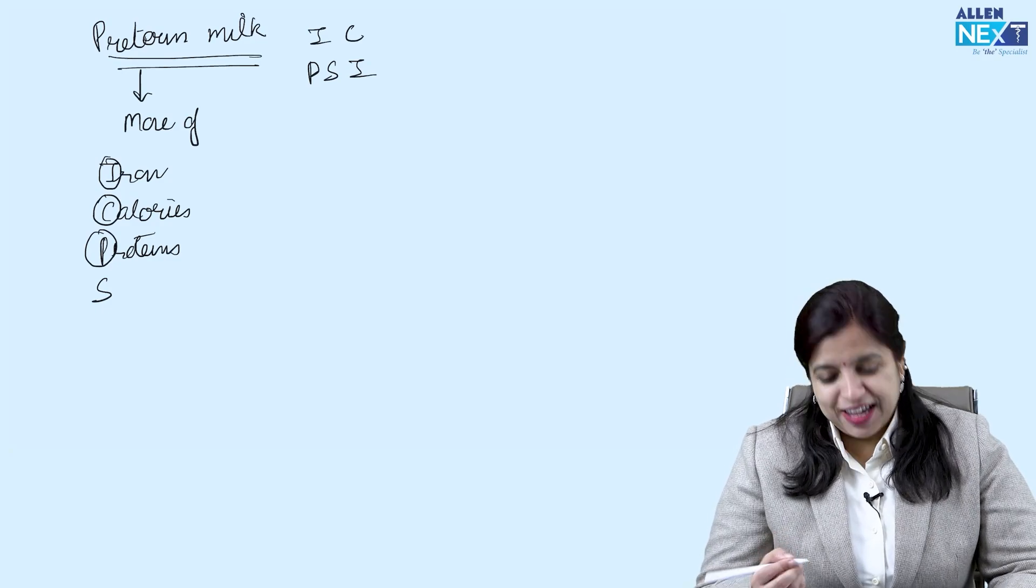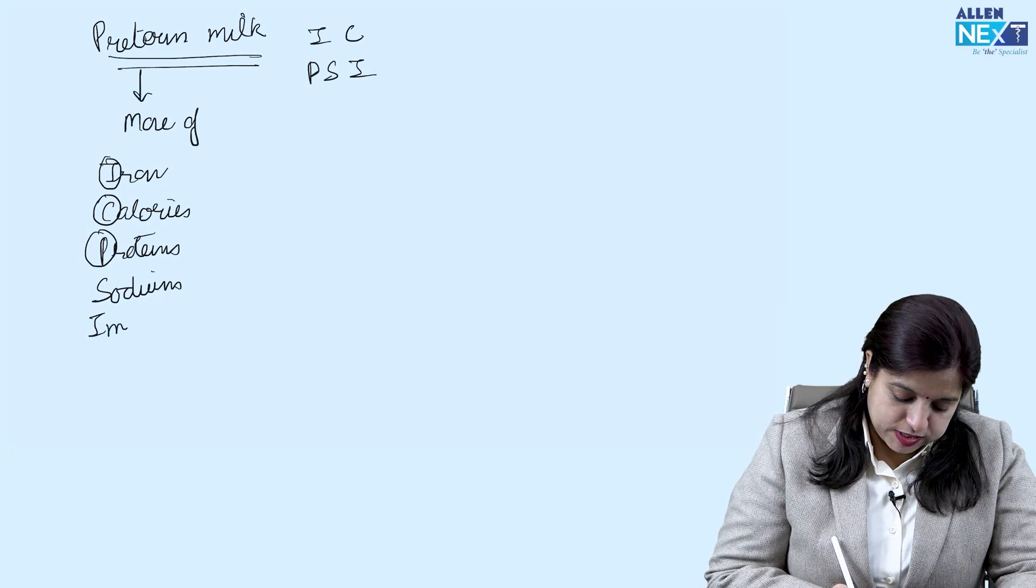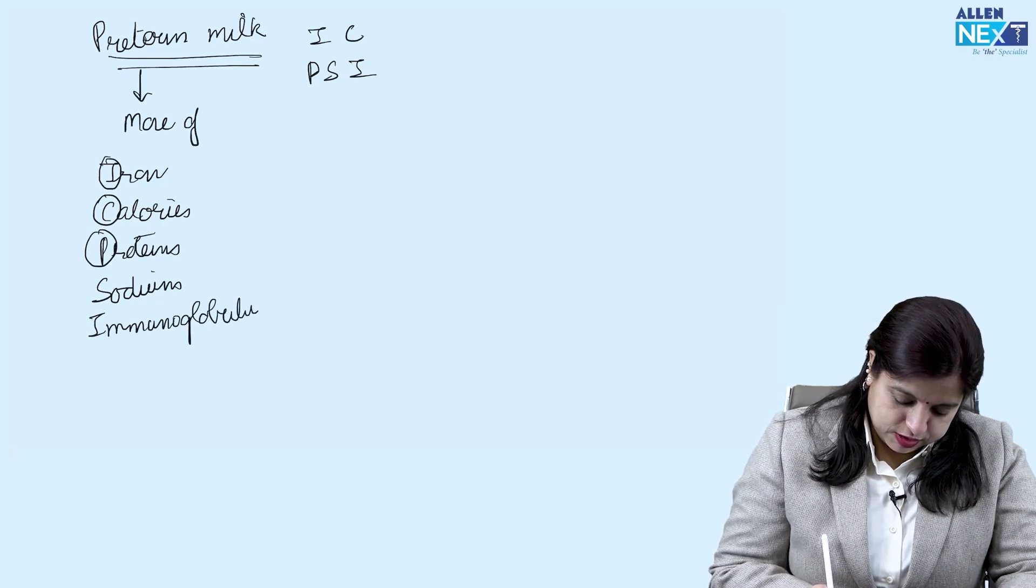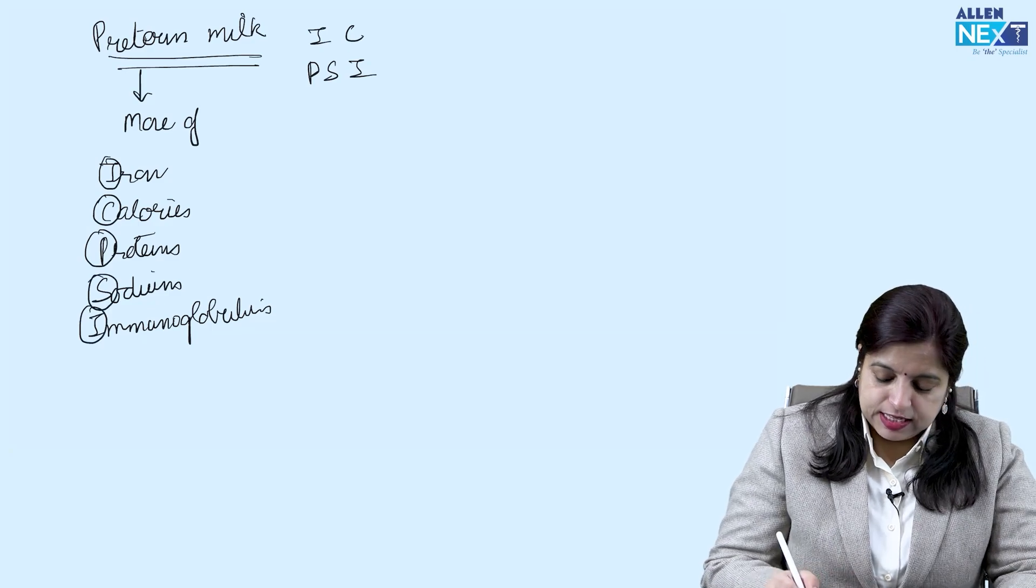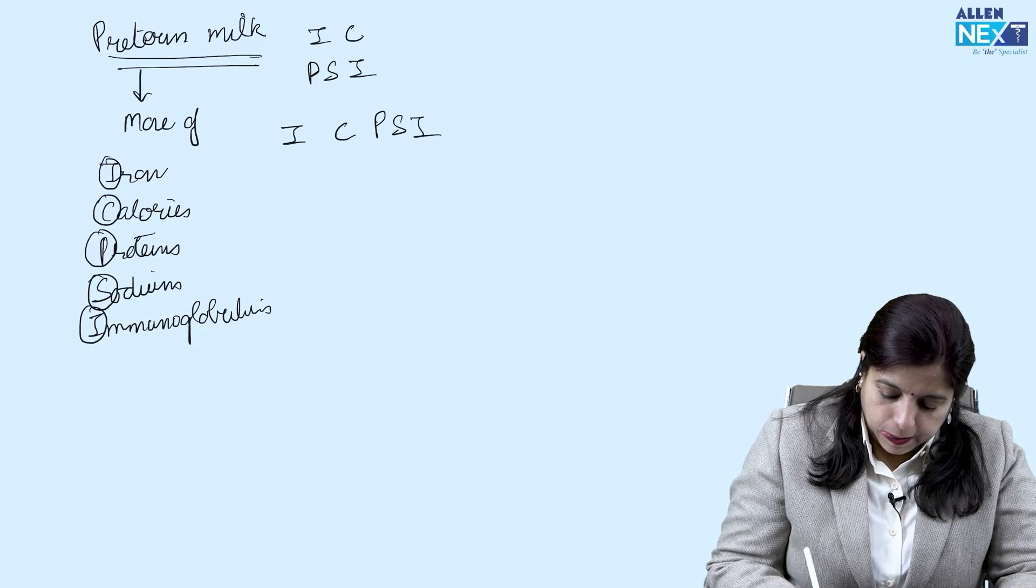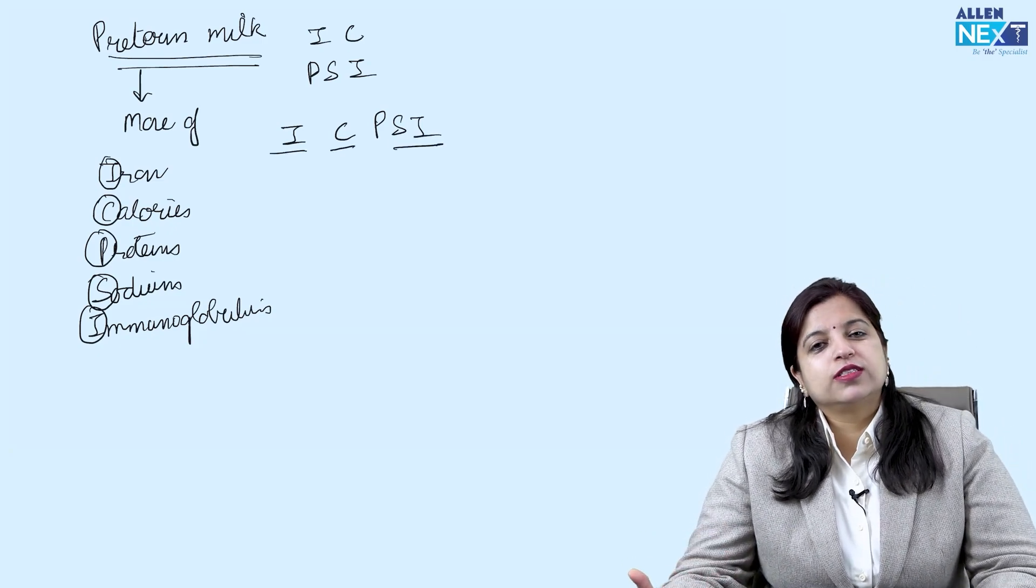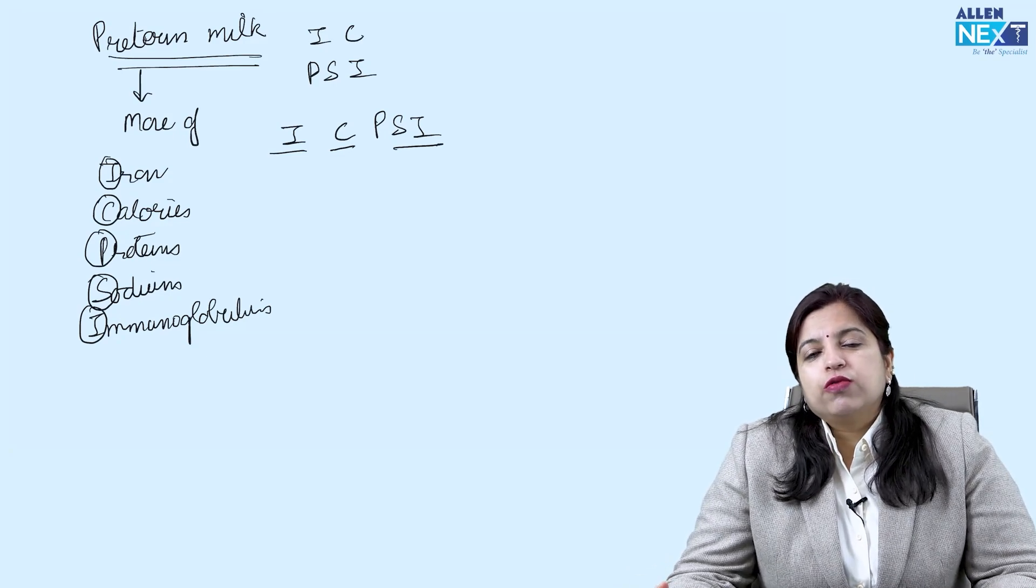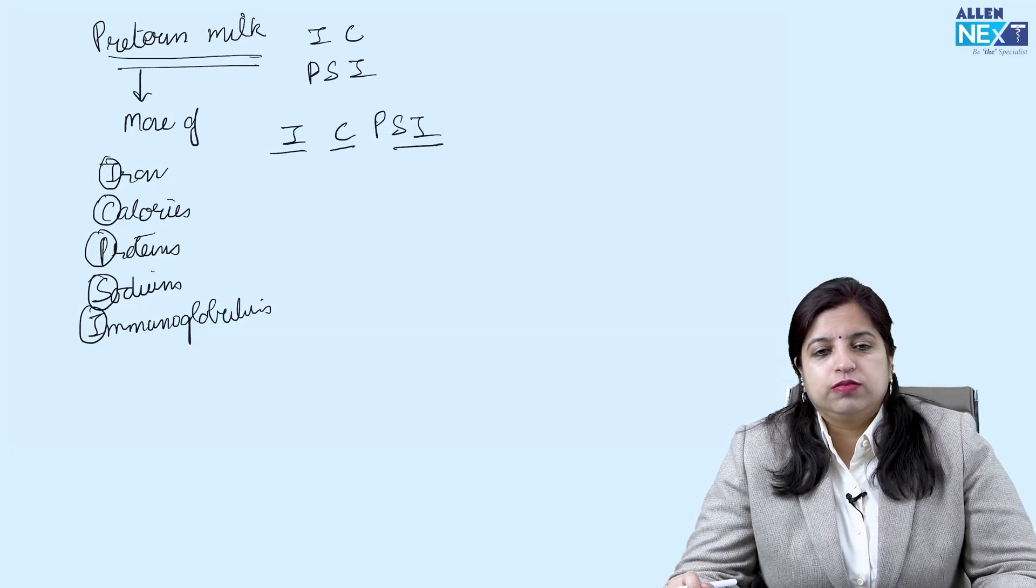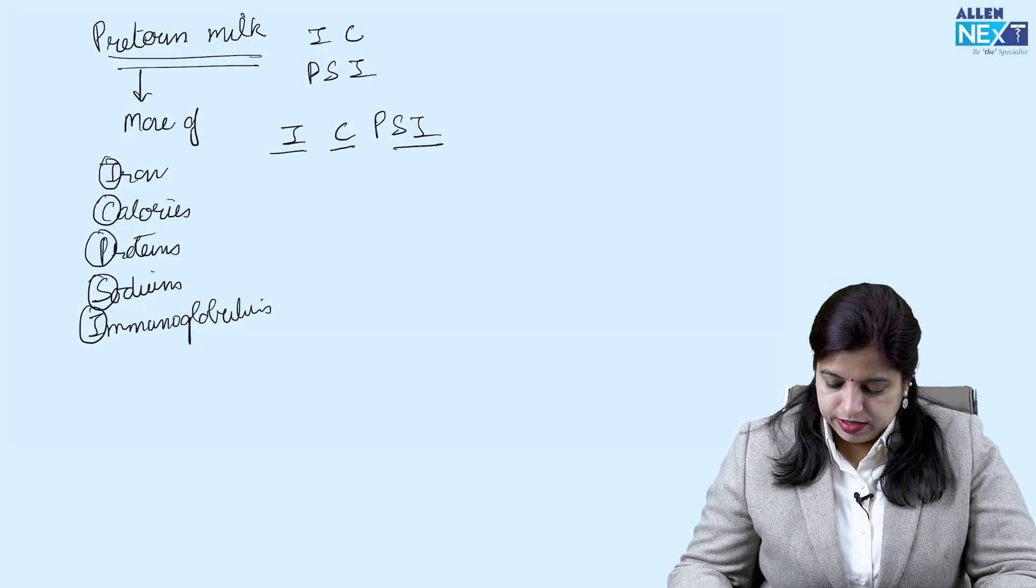S for sodium, and I again for immunoglobulins. I-C PSI. C is calories, so it is more calorie dense. P is for proteins, S is for sodium, and I again is for immunoglobulins. These are the peculiarities of preterm milk.